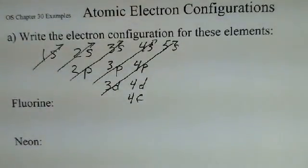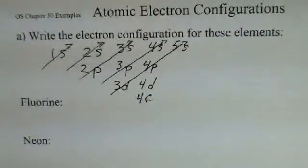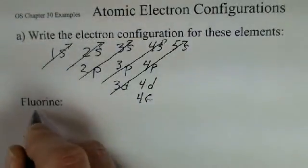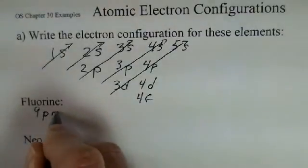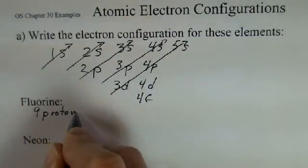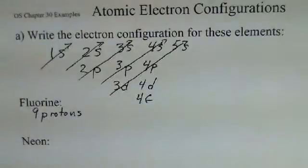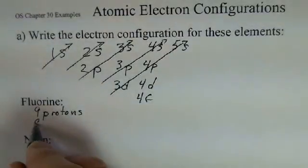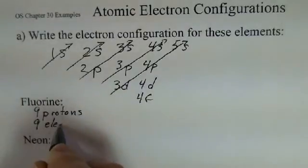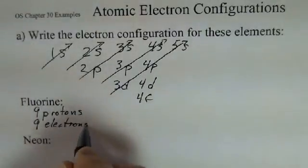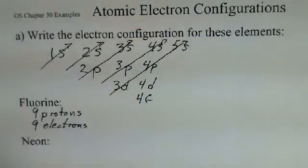We'll consider now fluorine. First we have to look up in a periodic table and we find that fluorine has 9 protons. How many electrons will a neutral fluorine atom have? It has 9 protons and 9 electrons is the correct answer.